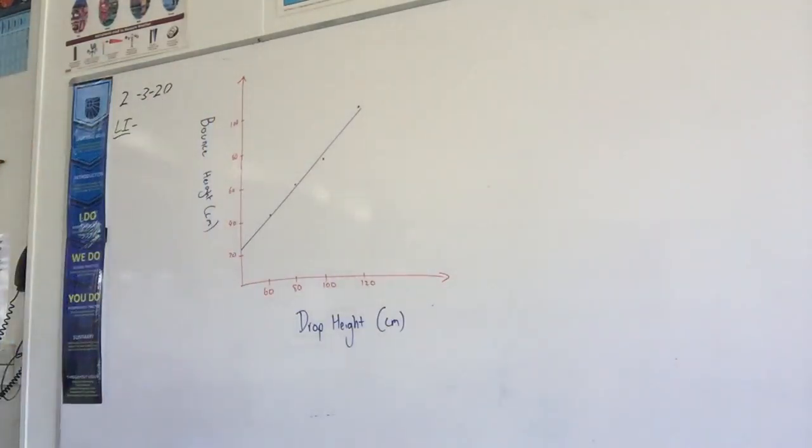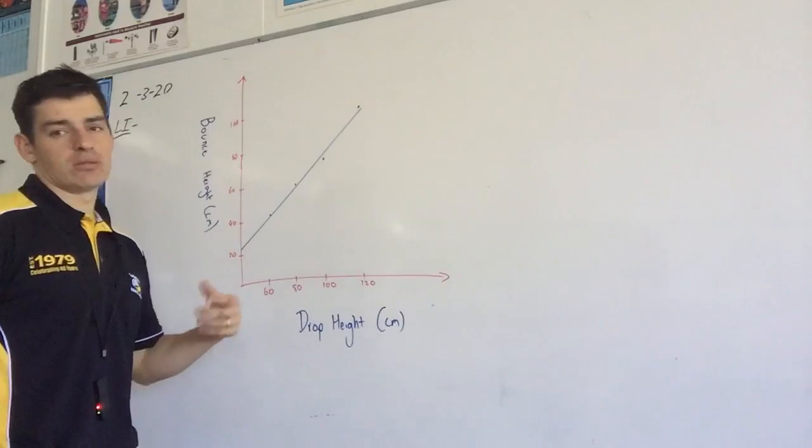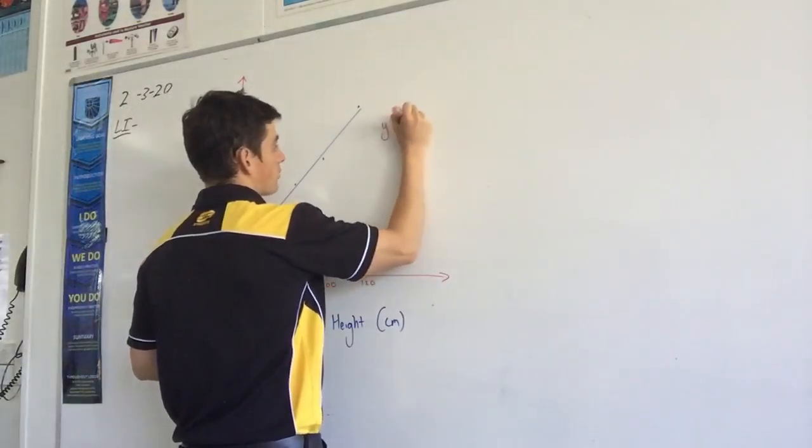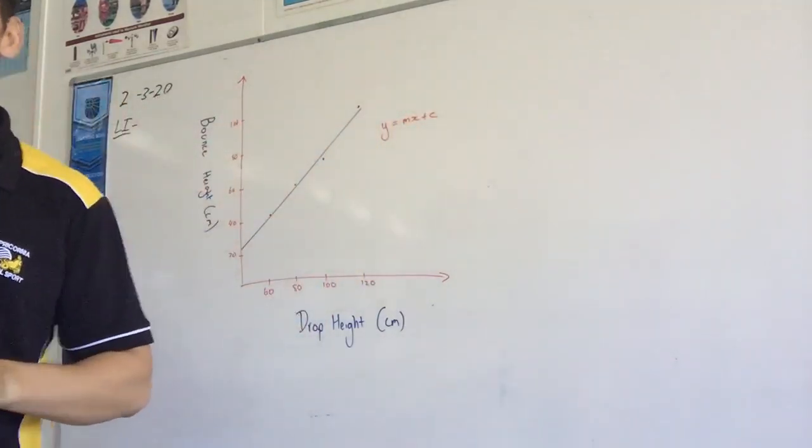But if I was to draw a line of best fit, it would probably look like that. Now, we can see that the data looks pretty linear. To identify the relationship between bound side, obviously I need to use y equals mx plus c. I need to find my m value, find my x value, and go on from there. I'm not going to do that.